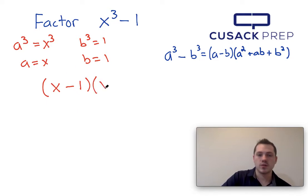a squared would be x squared plus a b would be plus 1 times x or x times 1 so I'm just going to write plus x and then plus b squared would be plus 1 squared which is just 1.